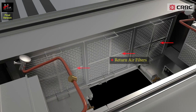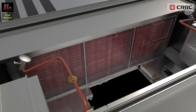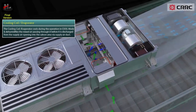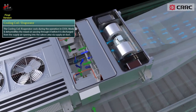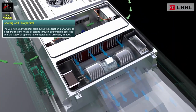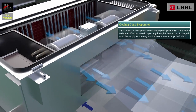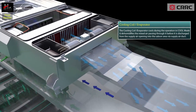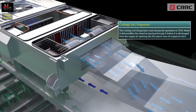A set of three return air filters are installed in the mixed air section in front of the cooling coil or the evaporator. During operation in cool mode, the cooling coil or the evaporator cools and dehumidifies the mixed air passing through it, before it is discharged from the supply air opening into the saloon area via the supply air duct.